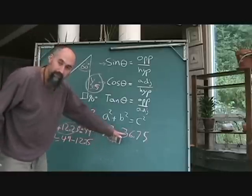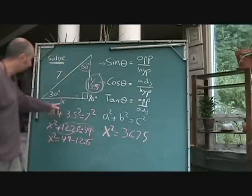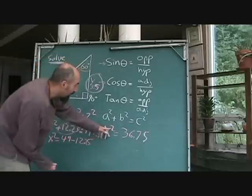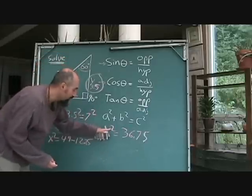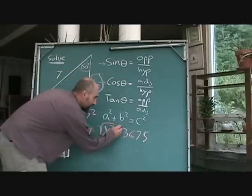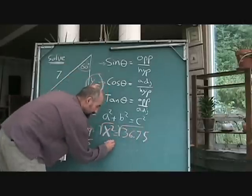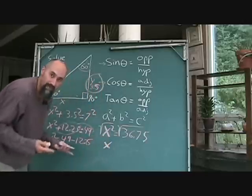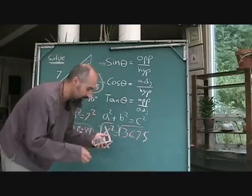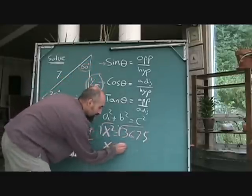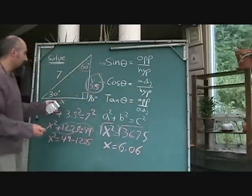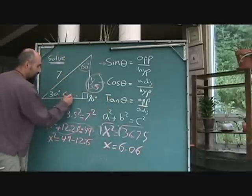Now you've got x squared equals this. You don't need x squared. You want to find out what x is. So the way you get x by itself is you do the opposite of squared. The opposite of something squared is a square root. So you take the square root of both sides. Square root of x squared is x. Square root of 36.75 is 6.06.